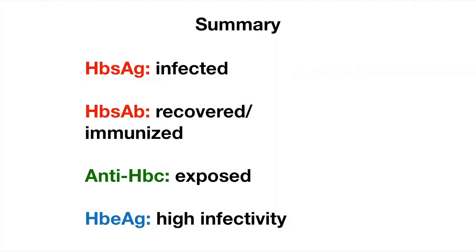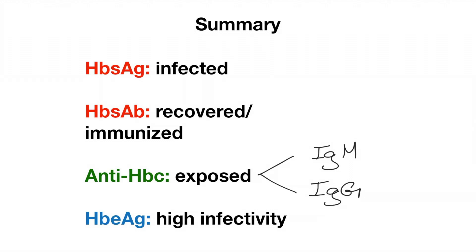To recap: the presence of surface antigen means the person is infected. Surface antibody indicates either recovery from infection or immunization. Core antibody helps determine if the person has been exposed, and can be broken down into IgM for acute infection and IgG for chronic. These three markers together determine the clinical status of the patient — surface antigen for active infection, surface antibody for immunity, and core antibody for prior exposure. The E antigen indicates high infectivity at that time. And that is hepatitis B serology.